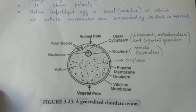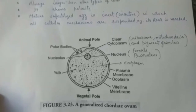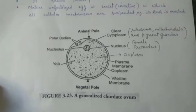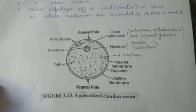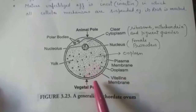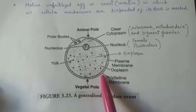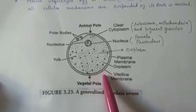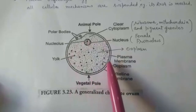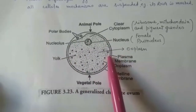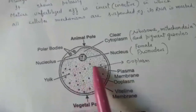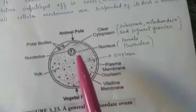We have covered oogenesis, as a result of which the egg or ovum is formed. In this video, we will study the structure of the mature ovum and the different types of ova. The mature ovum is a spherical or oval, non-motile cell. Its size varies but it is always larger than other cell types. It appears spherical and is covered externally by a plasma membrane. Outside the plasma membrane, a vitelline membrane is formed. The cytoplasm of the egg is known as ooplasm.